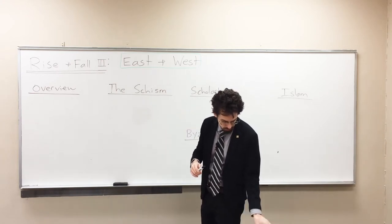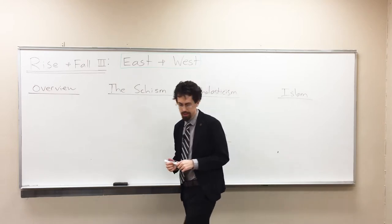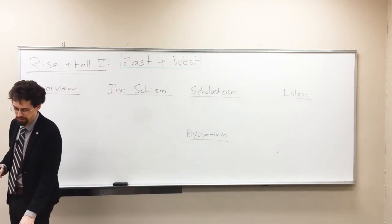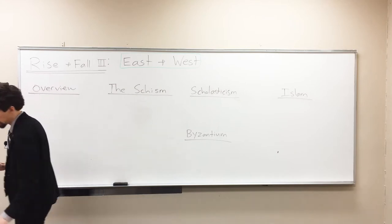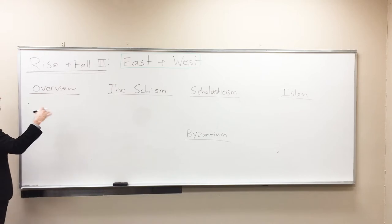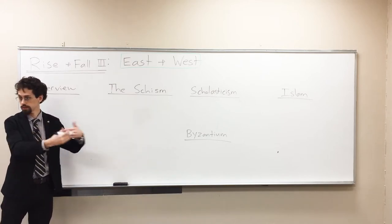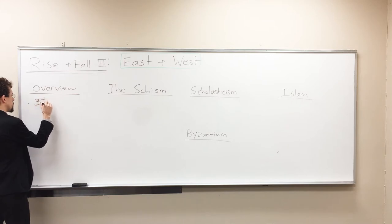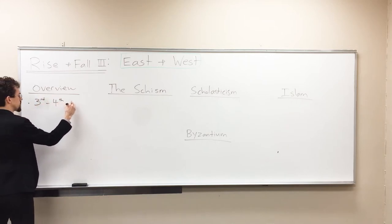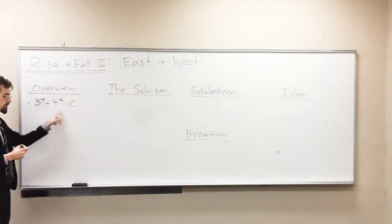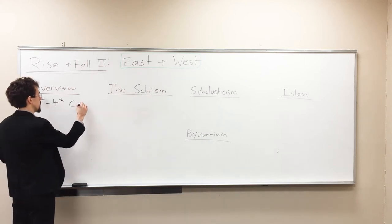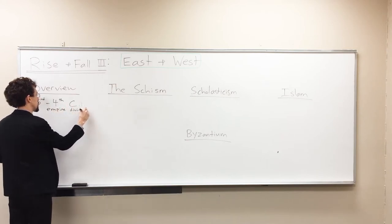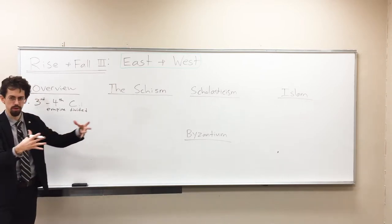Let's give you a few date touchpoints, because not that history is about memorizing dates, but dates can help give you a foothold. When we're looking at Christianity and the Roman Empire's Eastern and Western divisions, in the 3rd and 4th centuries — that's the 200s and 300s — this is when the empire is officially divided into the Eastern and Western empires. They work together and collaborate, but there's going to be a drift over time.